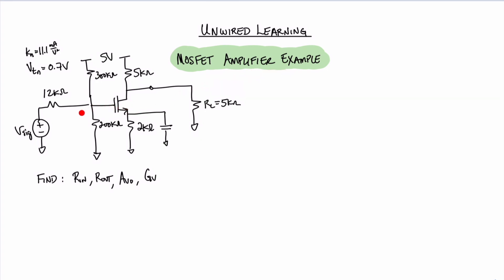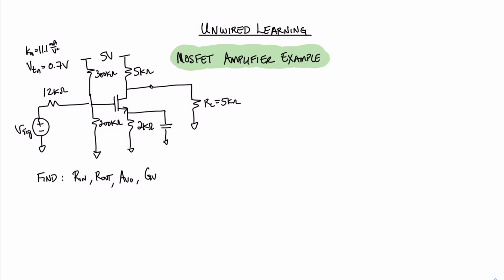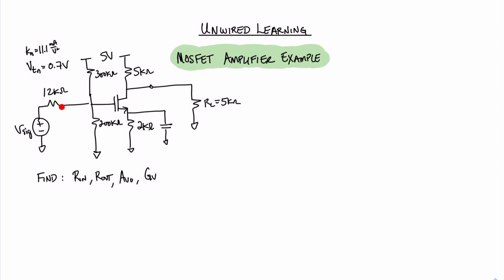We are going to perform an analysis of a common source amplifier. We know it's a common source amplifier because the output is at the drain terminal and the input is coming in at the gate, and therefore the terminal that is common between the input and the output is the source terminal, hence the name the common source amplifier. This particular transistor is biased using a 4-resistor biasing technique, and we have a few of the parameters for the transistor, and we have a signal source with a signal resistance, and we have a load resistance of 5 kilohms.